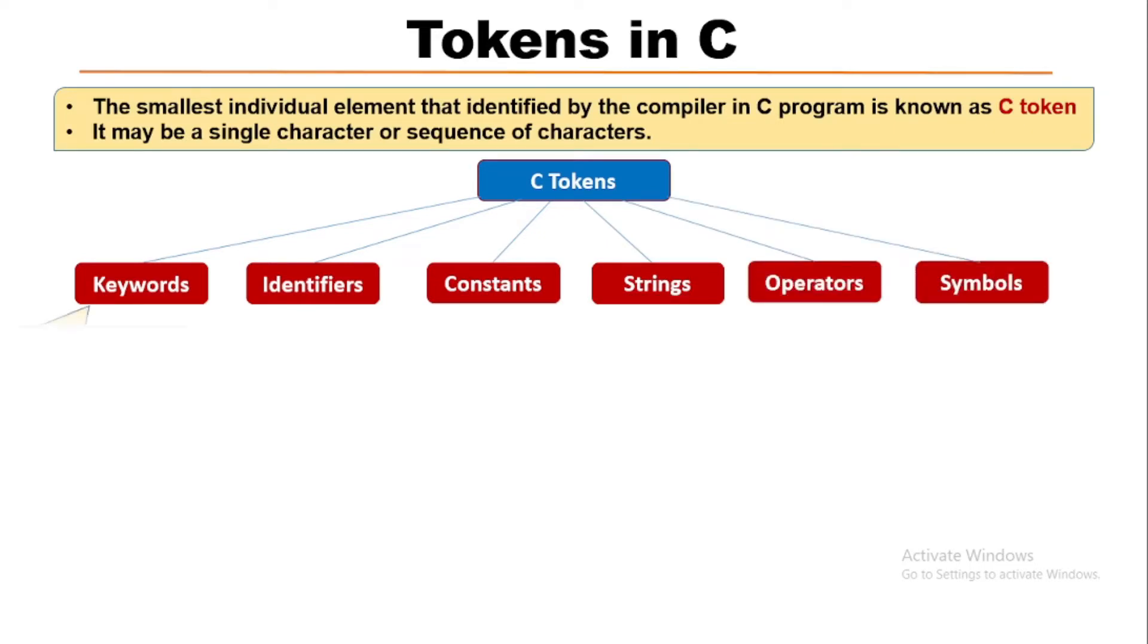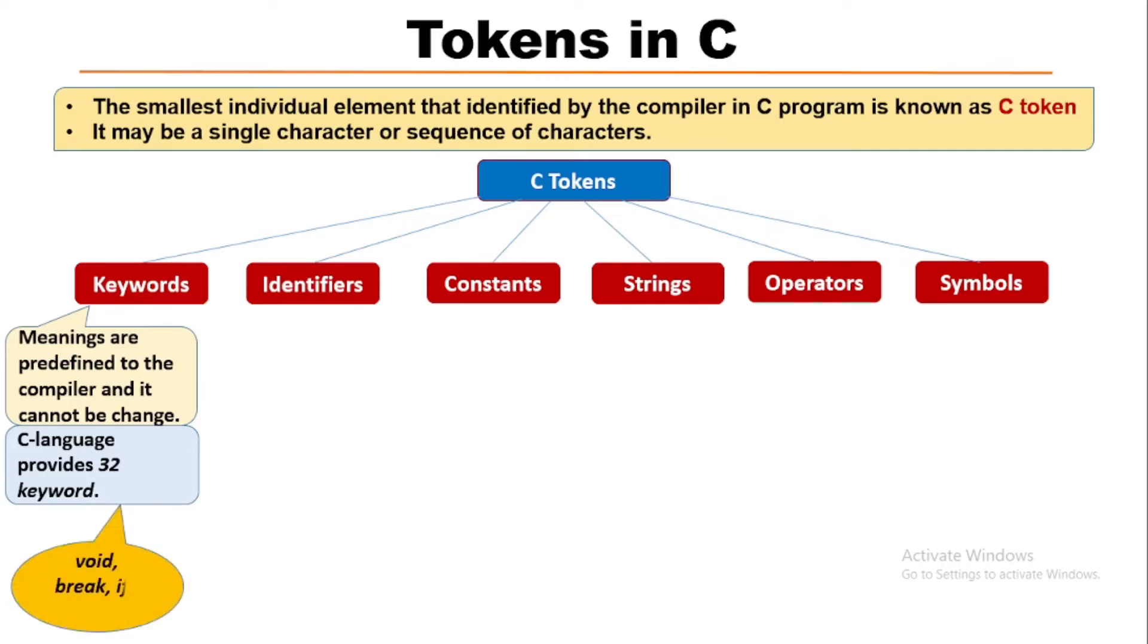First is keyword. Keywords are those words whose meanings are predefined to the compiler and cannot be changed. C language provides a total of 32 keywords. Examples of keywords are void, break, if, int, etc.